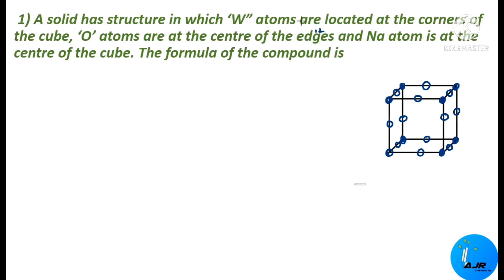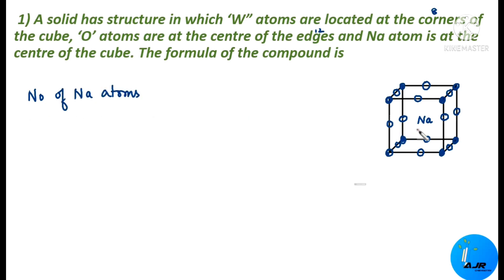Sodium atom is at the center of the cube. The number of sodium atoms is only one, present at the body center. Since it is present at the center of the unit cell, it is not shared by any other unit cell, so the total number of sodium atoms at the body center is one.